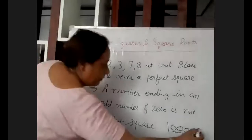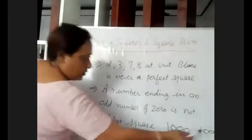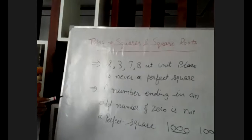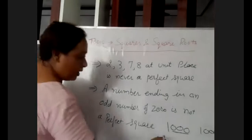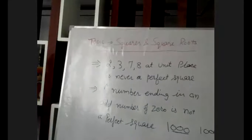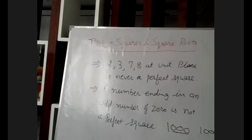Second example: if you have 10,000, we have 4 zeros. So 10,000 is a perfect square. Similarly, 100,000 has 5 zeros and 5 is an odd number, so 100,000 is not a perfect square. The point is: a number ending in an odd number of zeros is never a perfect square.